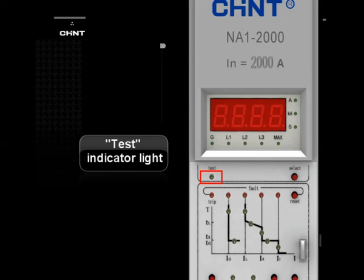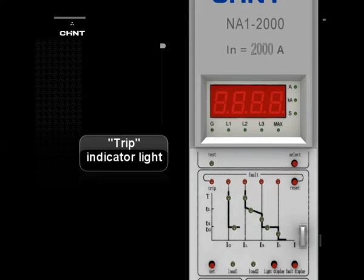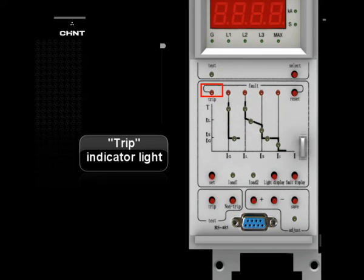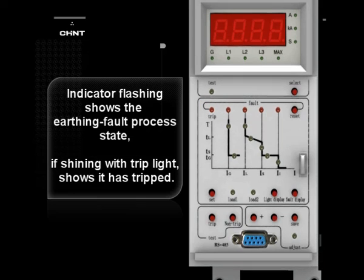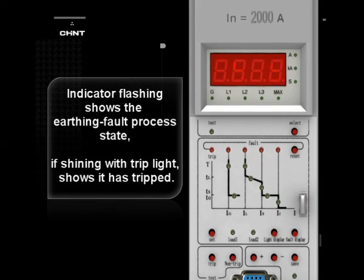Test Indicator Light: Indicates the breaker is in the test state. Trip Indicator Light: Indicates the release is sending out a tripping signal. Indicator Light: Flashing shows the earthing fault processing state. If shining together with the trip light, it shows that it has been tripped.